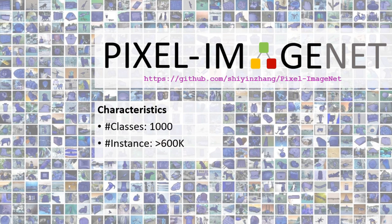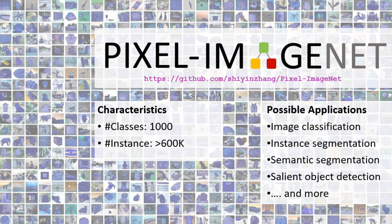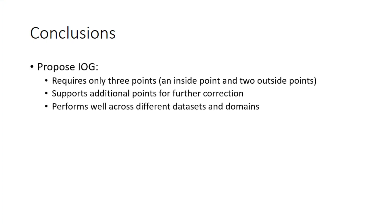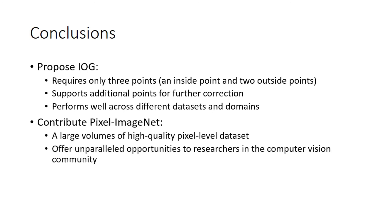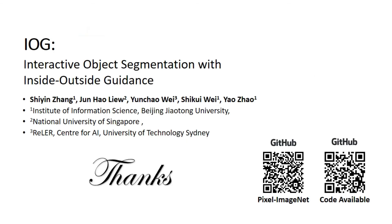PixelImageNet consists of 1,000 classes and more than 600,000 instances, and may be applied in many computer vision tasks. In conclusion, we propose a new efficient interaction method for interactive segmentation that performs well across different datasets and domains despite its simplicity. We also release the PixelImageNet dataset, which offers unparalleled opportunities to the computer vision community. The code and dataset are available online. Welcome to contact us to discuss more details. Thanks!